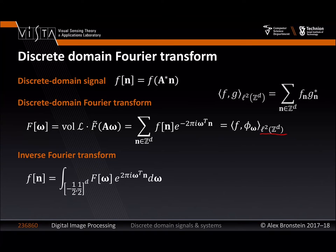The inverse Fourier transform will be given by something that resembles our original Fourier transform, but now the integration is performed on the unit cube. We'll continue from this point next week and see how we can do sampling and interpolation of already digital signals — how to resample one signal from one lattice to another. We'll get formulas very similar to the sampling theorem, and I will also show you how to implement these operations very efficiently, more efficiently than the naive approach would suggest.